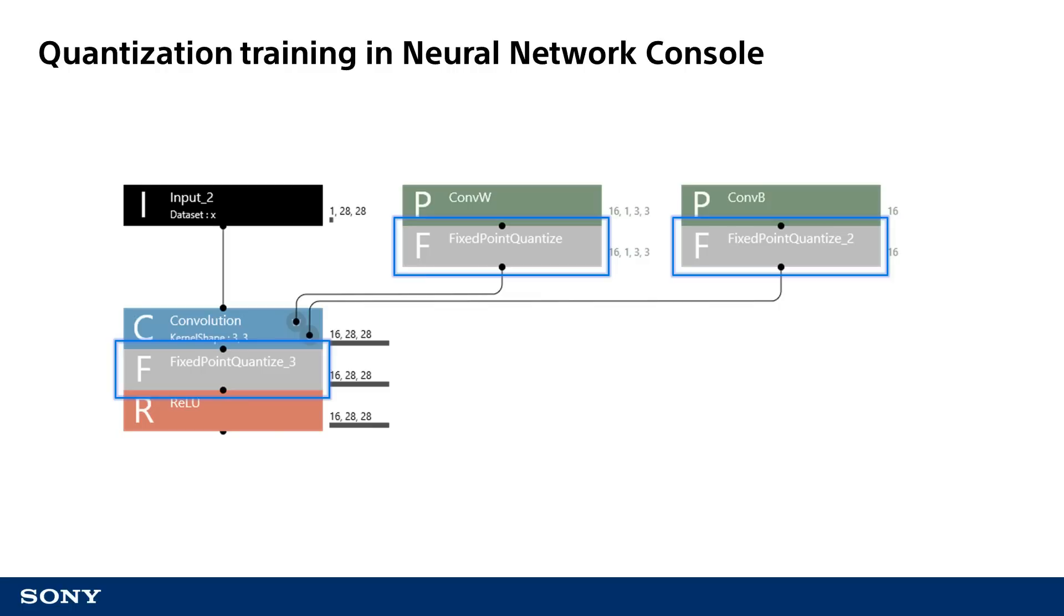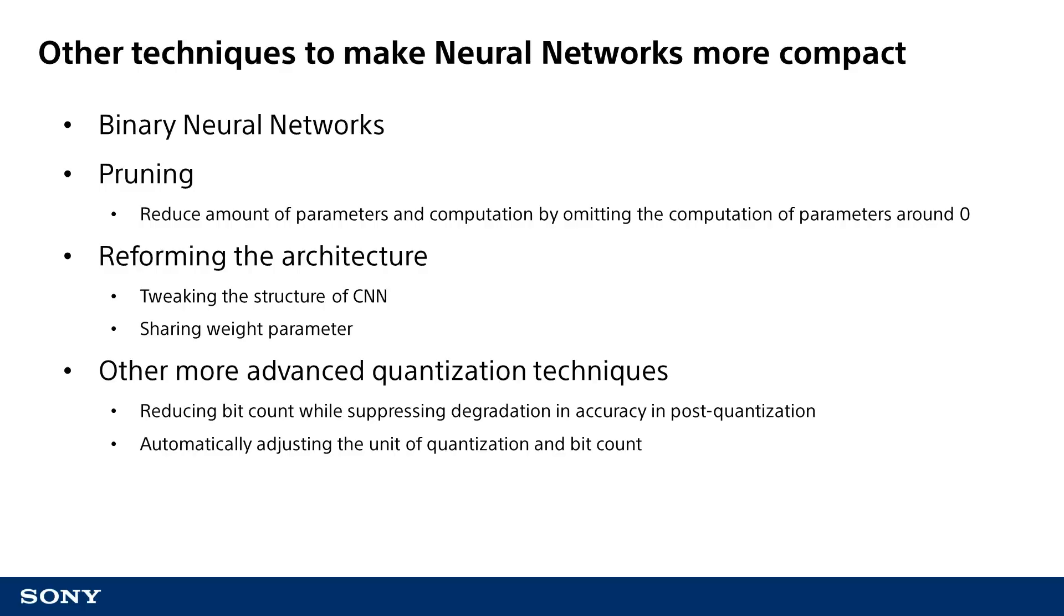Binary neural networks in which weights and data were quantized down to 1-bit values were actively researched around 2016. In addition to quantization, pruning unnecessary neuron operations is another approach to making neural networks more compact and faster. Other techniques such as reforming the architecture of convolutional neural networks are also being researched. I would also like to release future videos on other techniques to make neural networks more compact.